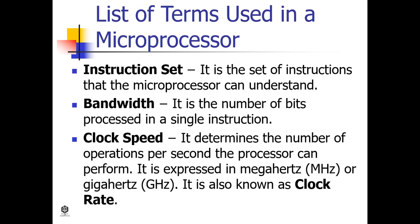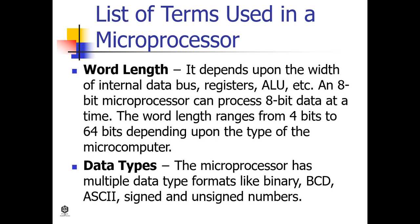Here are the key terms used in a microprocessor. Instruction set: the set of instructions that a microprocessor can understand. Bandwidth: the number of bits processed in a single instruction. Clock speed: determines the number of operations per second the processor can perform, expressed in megahertz or gigahertz — also known as clock rate. Word length: depends upon the width of the internal data bus, registers, ALU, and so on.